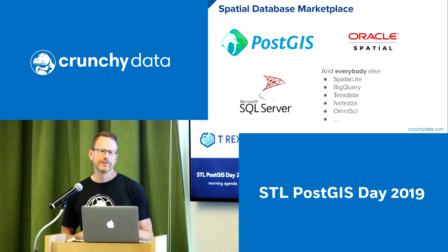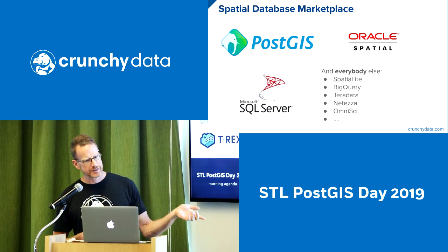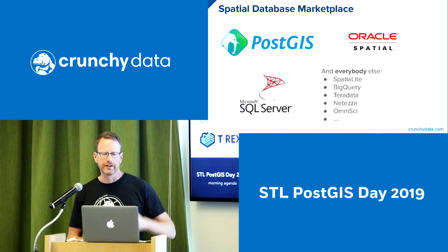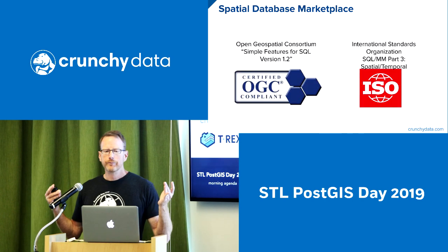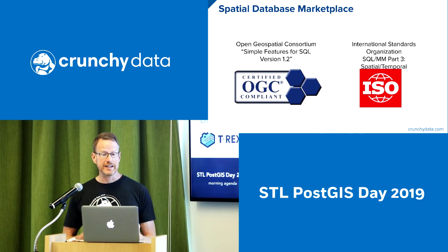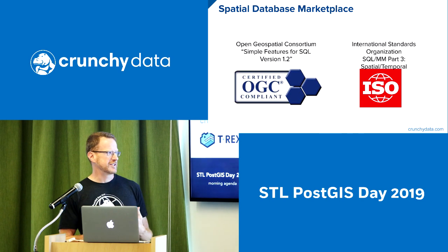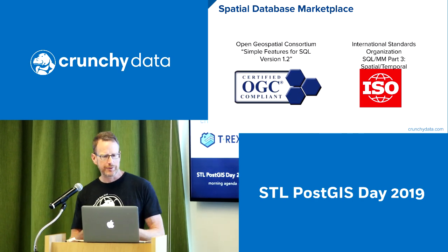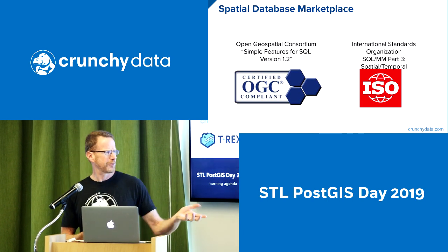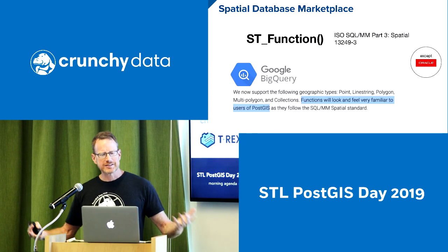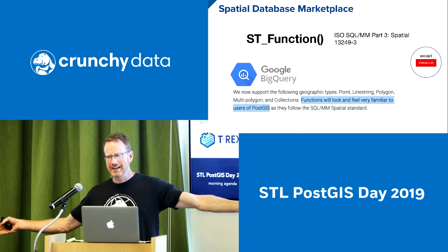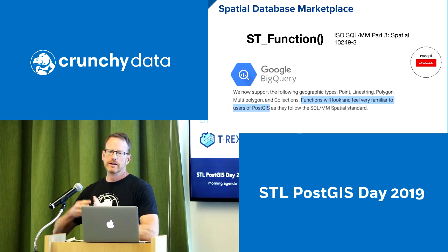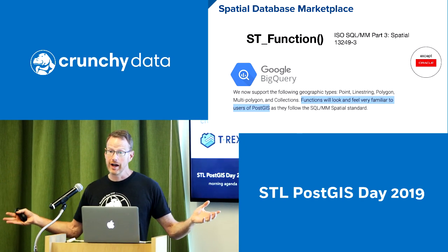The larger spatial database market really only has three fully capable spatial databases: Oracle Spatial, the spatial type in SQL Server, and PostgreSQL with PostGIS. Everything else tends to be niche or limited in functionality. All those major implementations follow common specifications — the initial one being the Simple Features for SQL specification from the Open Geospatial Consortium, superseded about five to ten years later by the ISO SQL MM Part 3 for Spatial Temporal. Those specifications provide a large suite of functions — maybe 60 in the OGC spec, maybe 300 in the ISO spec — all functions starting with 'ST'.